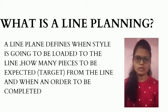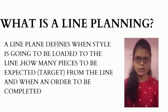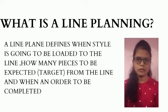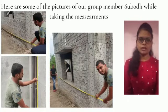I am giving information about our sheet. First of all, Line Plan — a Line Plan is defined as when a style is going to be loaded to the line, how many pieces are expected from the line, and when an order is to be completed. So we are taking our own house measurements.